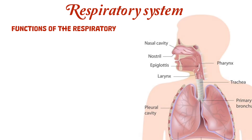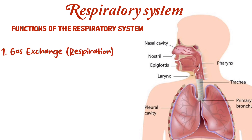Hello everyone, in today's video we are going to talk about the respiratory system. So let's start with its function. The main function of the respiratory system is the exchange of oxygen and carbon dioxide between the air and the bloodstream. Oxygen from inhaled air diffuses into the blood, while carbon dioxide, which is a waste product of metabolism, diffuses out of the blood and is exhaled.